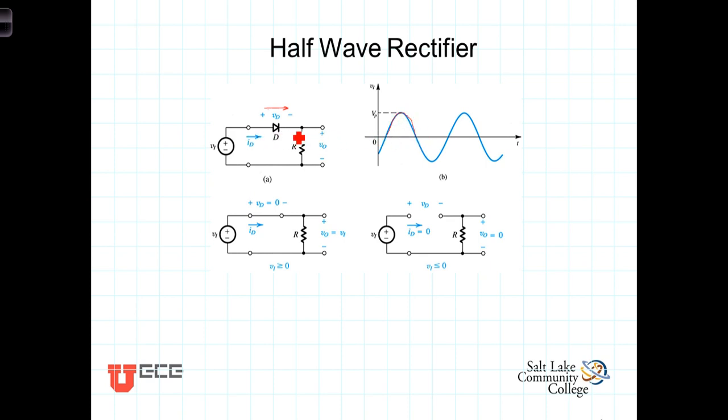So when the input voltage is positive, the diode will be conducting. It'll be a short circuit and the full input voltage will be seen across the resistor. Current will be flowing through here and the voltage across here will equal the input voltage.